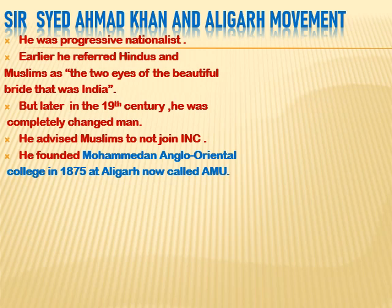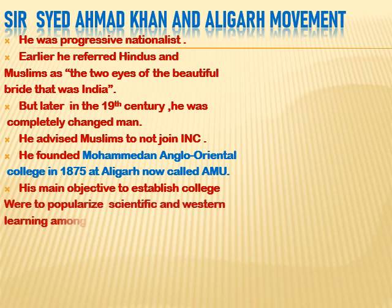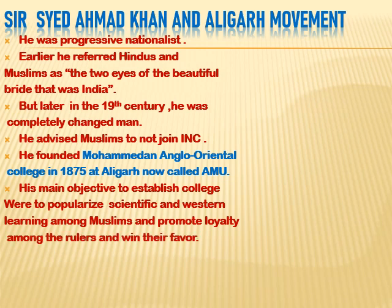Secondly, Sir Sayyid Ahmad Khan founded the Mohammedan Anglo-Oriental College in 1875 at Aligarh, which is in UP, now known as AMU — Aligarh Muslim University. Here he focused on Muslim education combined with Western education. His main objective in establishing the college was to popularize scientific and Western learning among Muslims, because Muslims were backward at the time. He warned that Muslims should not fall behind in comparison to the Hindus, so he popularized scientific and Western learning within this institution.